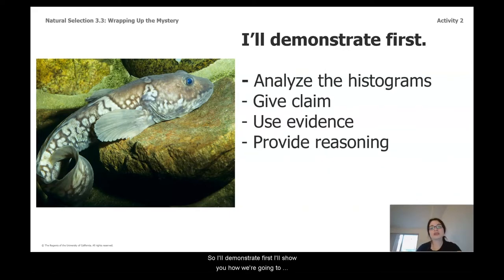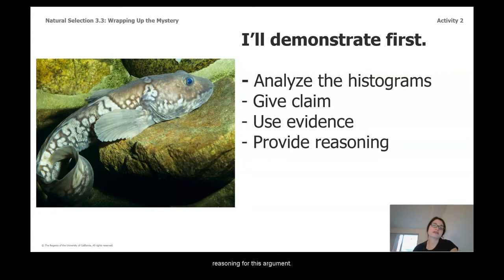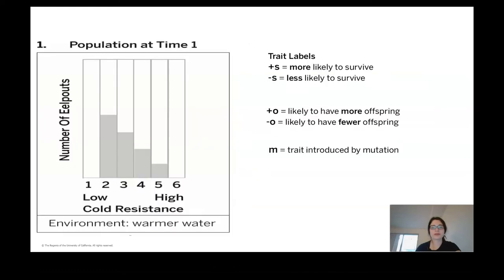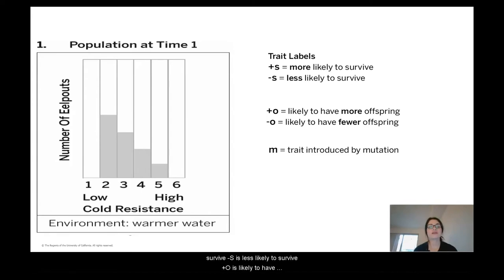I'll demonstrate first — showing how to analyze the histograms and how to give claim, evidence, and reasoning for this argument. A reminder of trait labels: plus-S means more likely to survive, minus-S is less likely to survive, plus-O is likely to have more offspring, minus-O is likely to have fewer offspring.